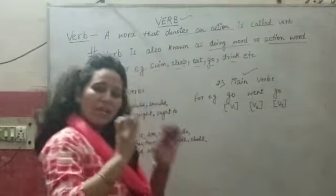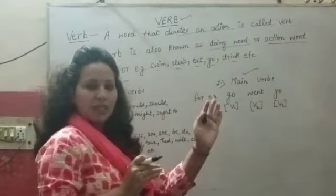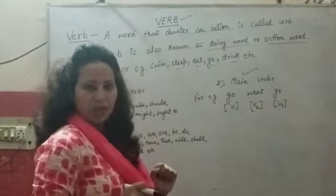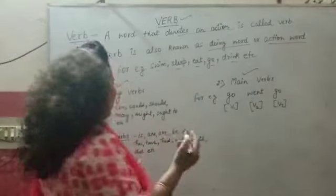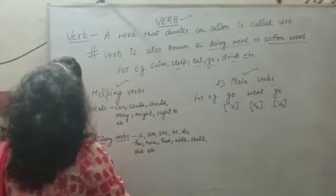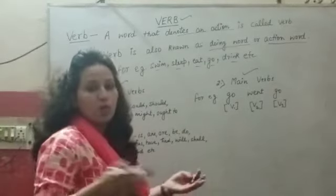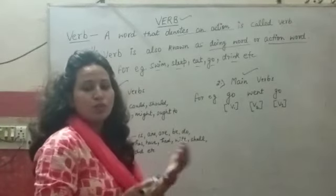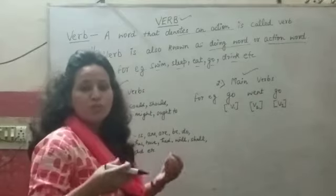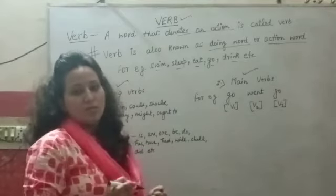When we form a sentence, helping verbs come after the subject. Helping verbs are of two types: modals and auxiliary verbs. Modals are: can, could, should, may, might, used to — these are all modals.